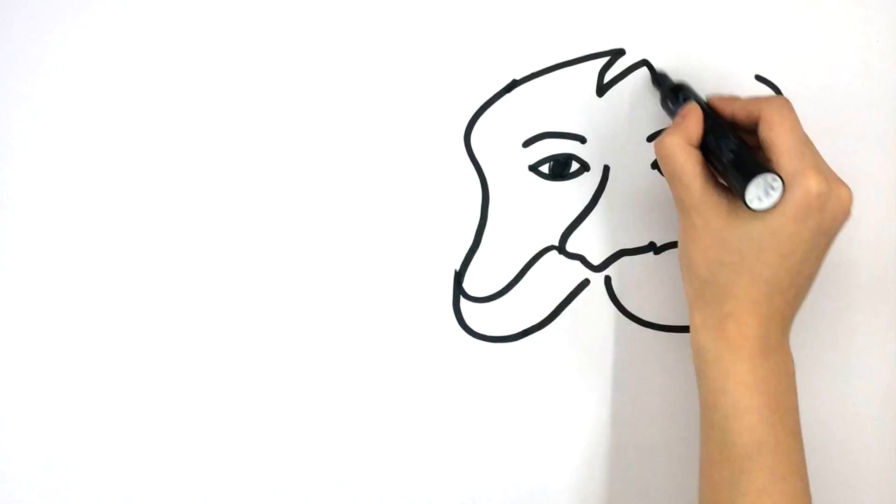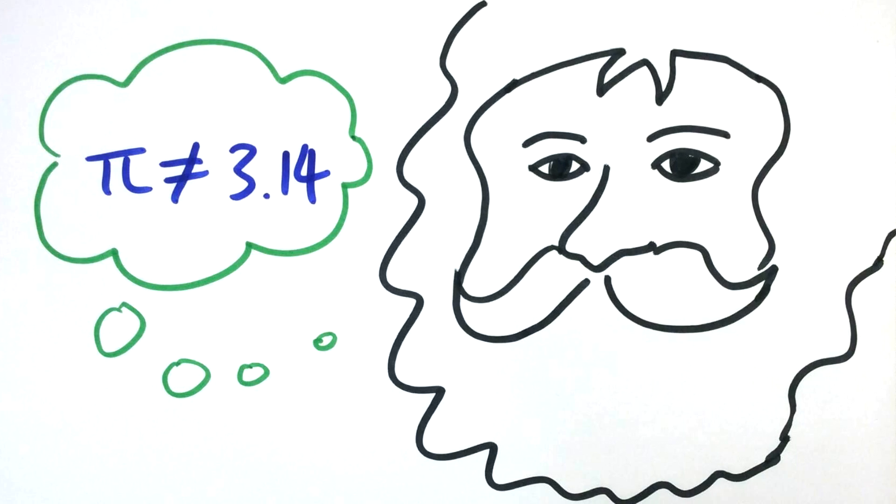But what Archimedes used pi to represent wasn't the constant 3.14159 we know it as today.